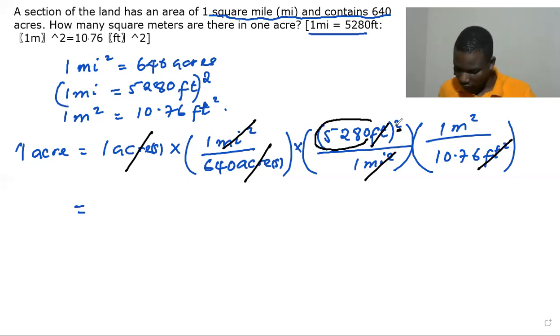So you shouldn't forget that. So what we have is 5,280 squared. Then we divide.